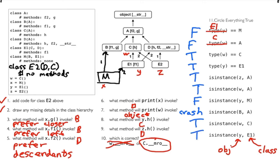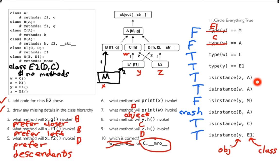We learned how to think about the class hierarchy in terms of code. We learned the rules for which methods are going to get called. We learned about method resolution order and how it helps us answer these questions. And we learned ways to explore both the type of an object and where the type might fit into some hierarchy, and how to write code to check that.